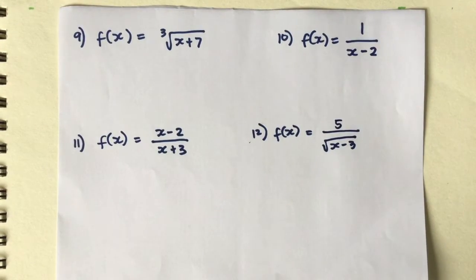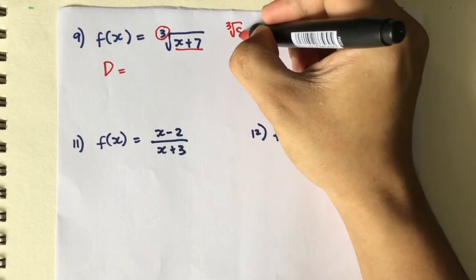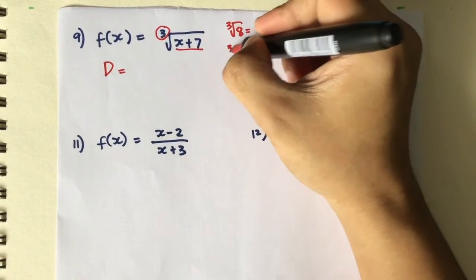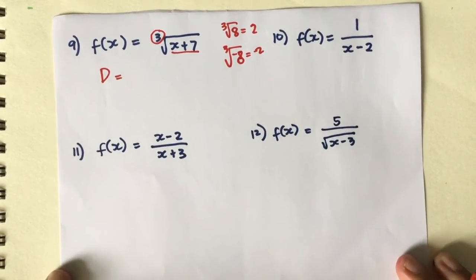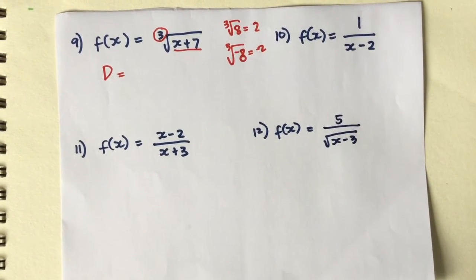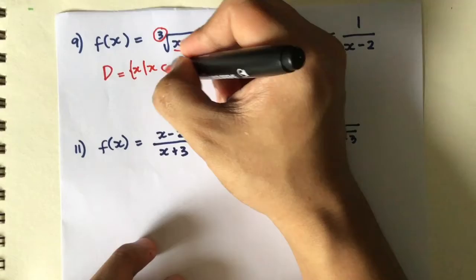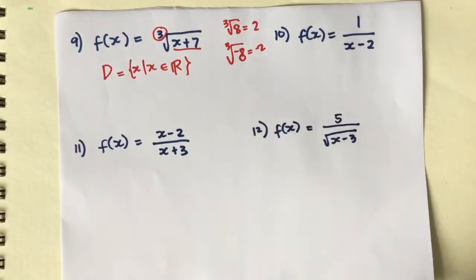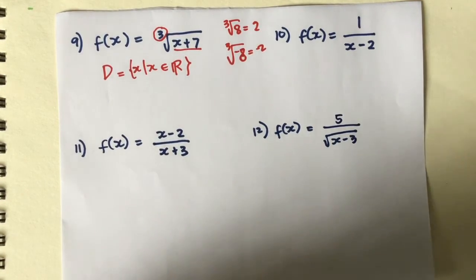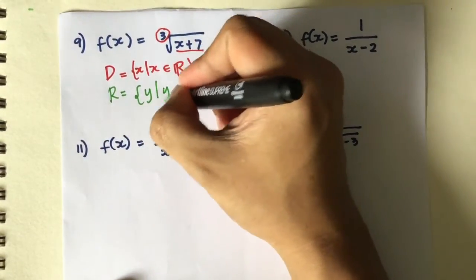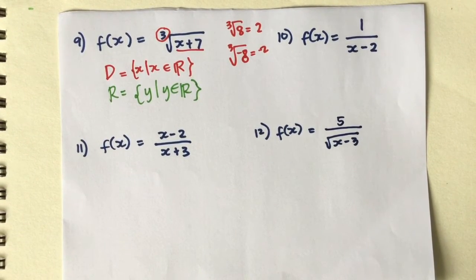For number 9, the index is a cube root. The cube root of 8 gives 2, and the cube root of -8 gives -2, so cube roots allow both negative and positive values to be extracted. This means we are not limited in our domain — we can use any values of x. Since the cube root allows negative, positive, and zero outputs, our range is also not limited.